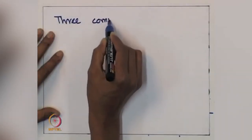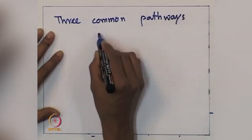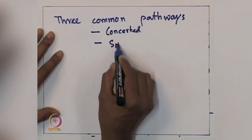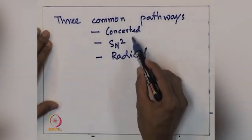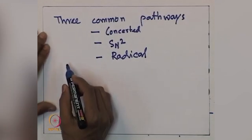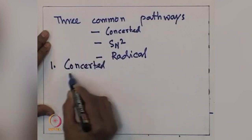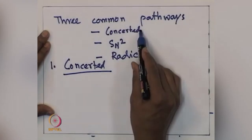There are three common pathways by which oxidative addition can occur. One could be concerted, another could be SN2, and the final one could be radical. Today's class will mainly discuss these different modes of oxidative addition — the first one is the concerted pathway.